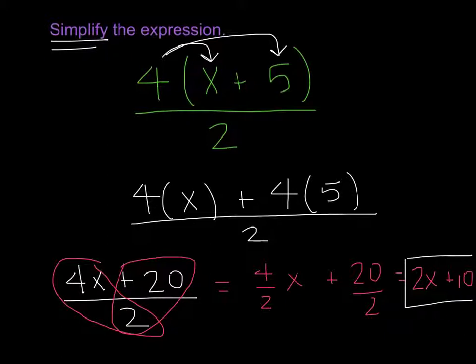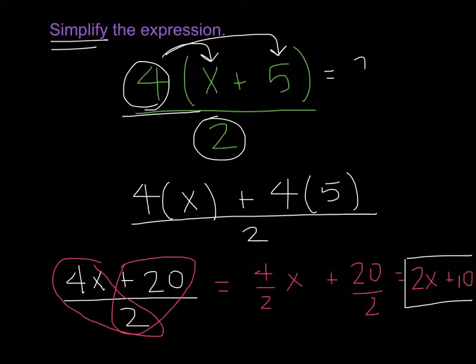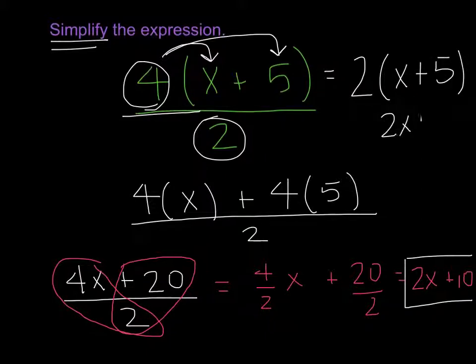Advanced thinkers could also have said 4 divided by 2 is 2, so that's 2 times parentheses x plus 5, which is 2x plus 10. Two ways to think about it.